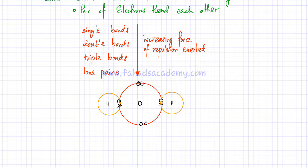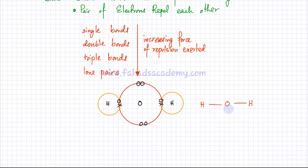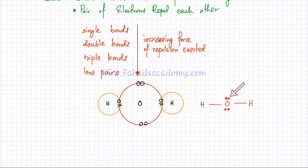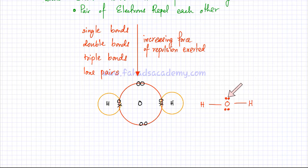So I can redraw oxygen in the middle forming a bond with one hydrogen and another bond with a second hydrogen. This oxygen also has two lone pairs in the outer shell. So oxygen has four electron entities in total: a group of electrons in this bond, a group in the other bond, and two lone pairs. VSEPR theory states that all of them are going to repel each other.